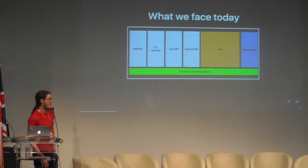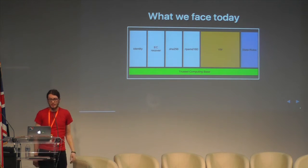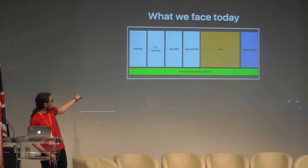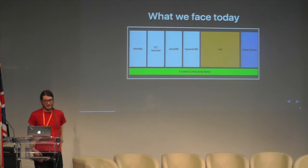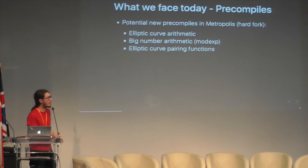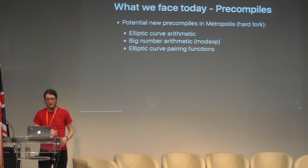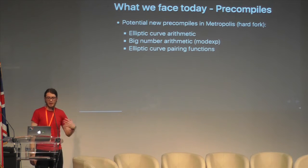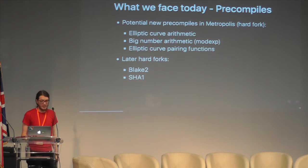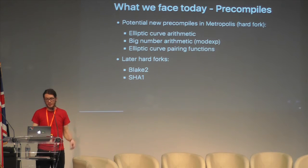So here's what we face today. We have a rather large trusted computing base. We have to trust that all the code for all the precompiles are correct. We have to trust the VM is correct, and we also have to get the state rules correct. And we want to expand — we want to add more precompiles: elliptic curve arithmetic, big number arithmetic, elliptic curve pairing functions. And maybe later on, there are proposals also for things like SHA-2 and SHA-1. There's probably more that I've missed for different precompiles. Also, SHA-3 is an instruction — it's not a precompile, but it sort of fits with the rest of them.